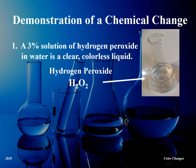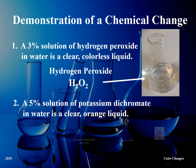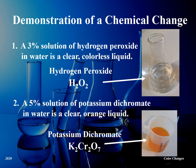We take a flask containing 200 milliliters of a 3% solution of hydrogen peroxide in water. This clear, colorless liquid is available off the shelf at any pharmacy. Next, we prepare a 5% solution of potassium dichromate in water by adding 5 grams of the orange crystals in 100 milliliters of water. This gives us a clear, orange liquid.